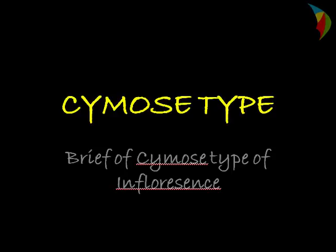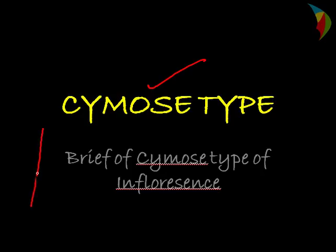Hello friends, we will discuss about cymose type of inflorescences. In the earlier session we discussed about types of inflorescences and racimose type of inflorescences. Now we will discuss about different types of cymose inflorescences. The main important feature of cymose inflorescences is that the terminal bud becomes a flower and the main axis has a limited growth — that is, the terminal axis ends in a flower.